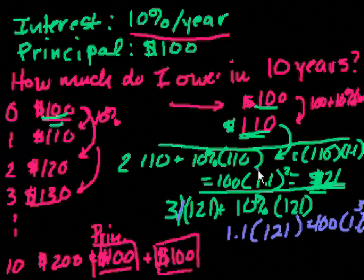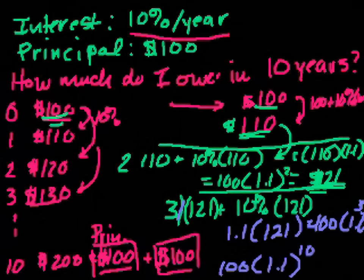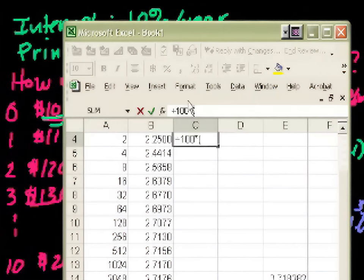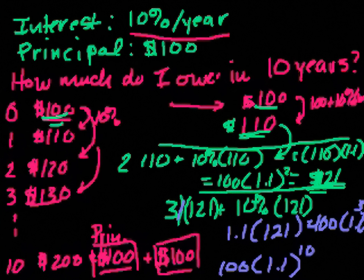And if you keep doing this, and I encourage you to do it because it'll really give you a hands-on sense, at the end of 10 years we will owe $100 times 1.1 to the tenth power. And what does that equal? Let me get my spreadsheet out. So 100 times 1.1 to the tenth power. So $259 and some change.